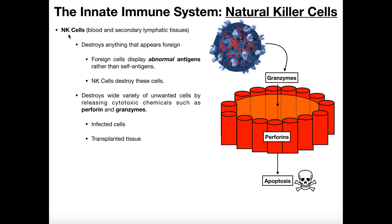A self-antigen is basically a name tag that says 'I'm a part of the host.' Your own cells — liver cells, heart cells, muscle cells — all display self-antigen. It's basically a name tag that says 'hey, I'm part of the host, don't hurt me.' And so the natural killer cell won't hurt those cells.